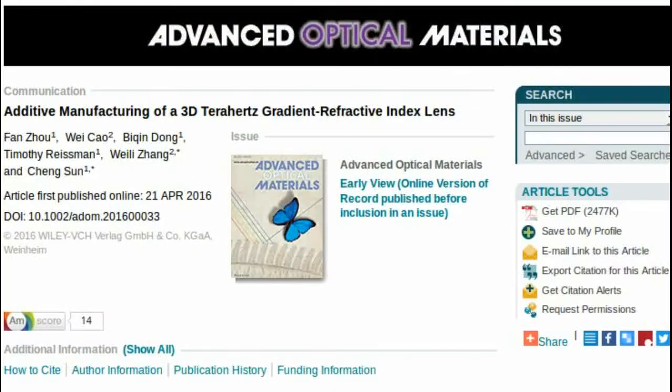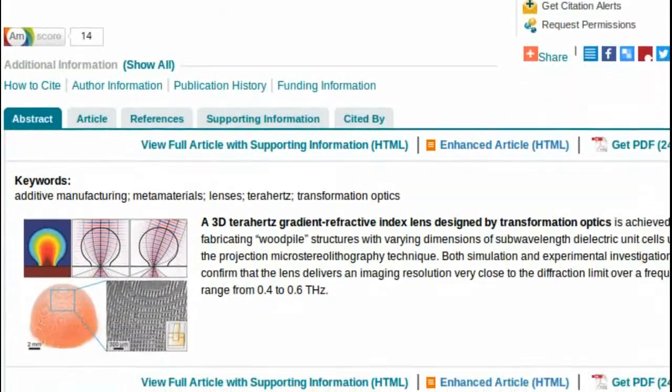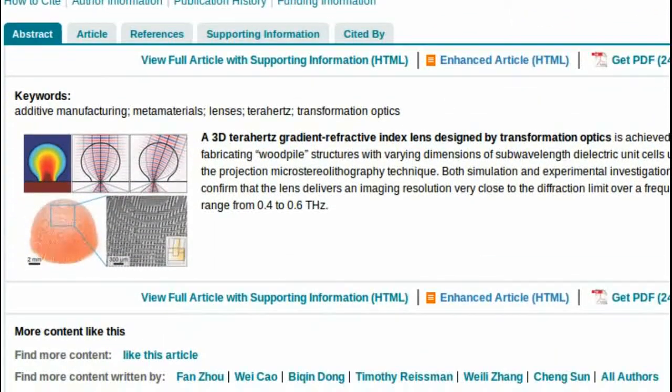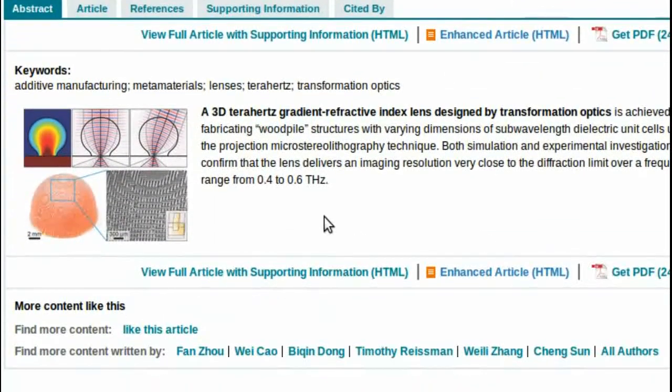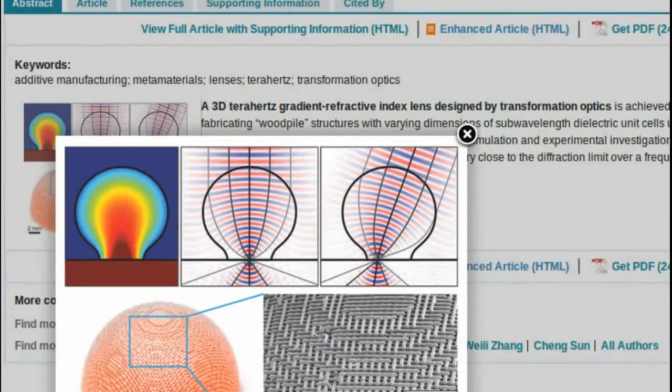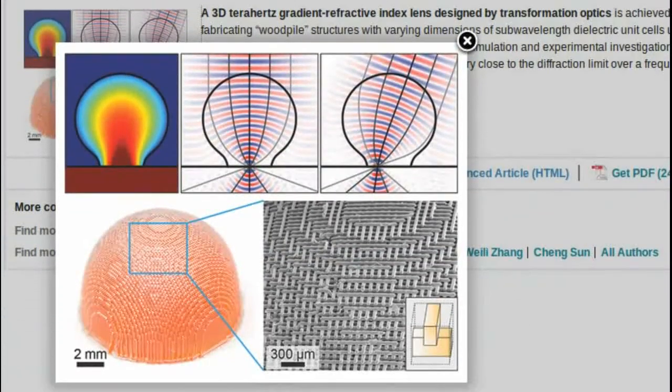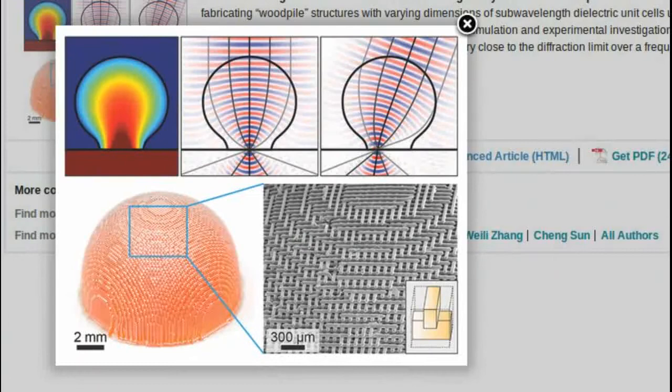While X-rays can detect metals, they cannot detect plastic or chemicals. Terahertz scanners, however, can detect both items to discover concealed weapons, biological weapons such as anthrax, and plastic explosives.